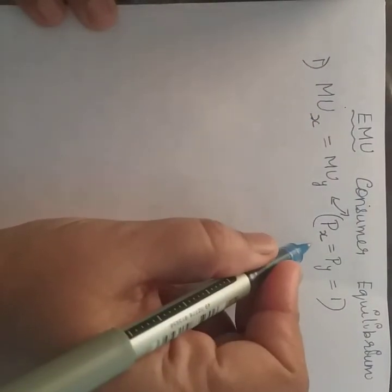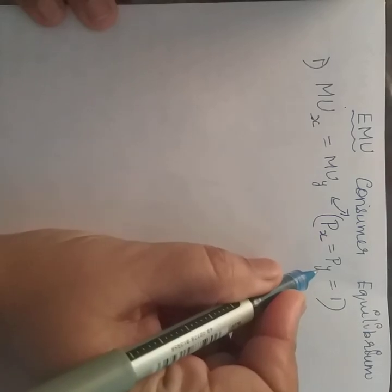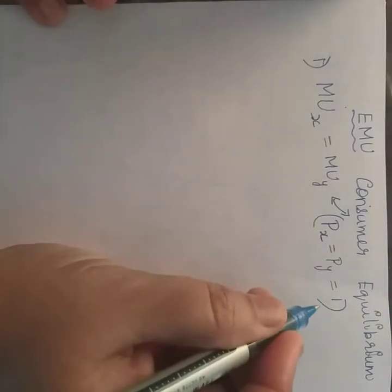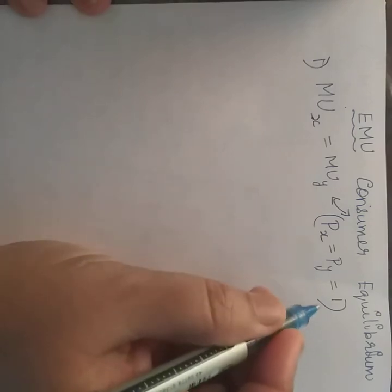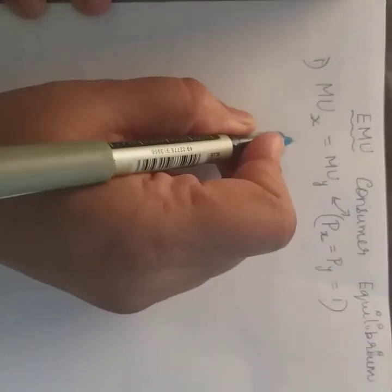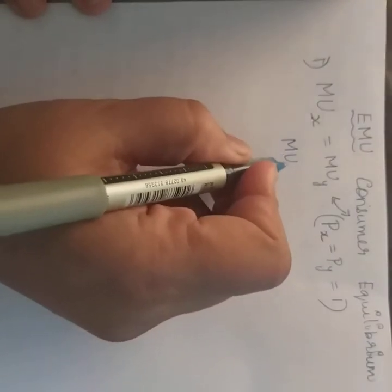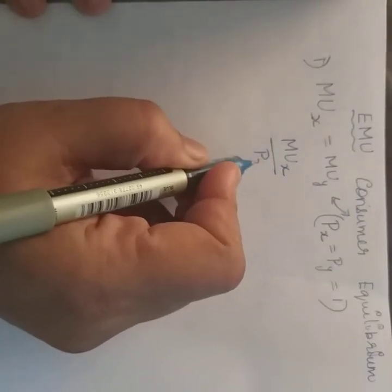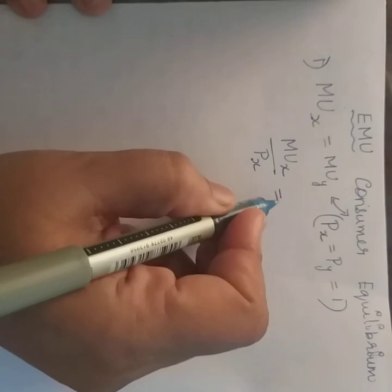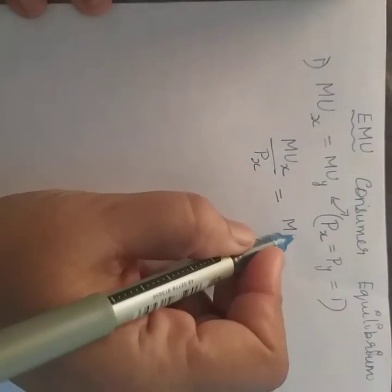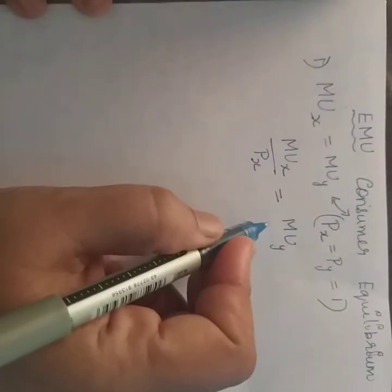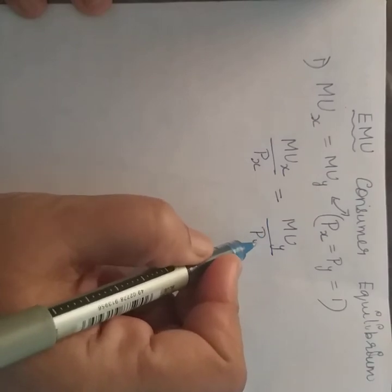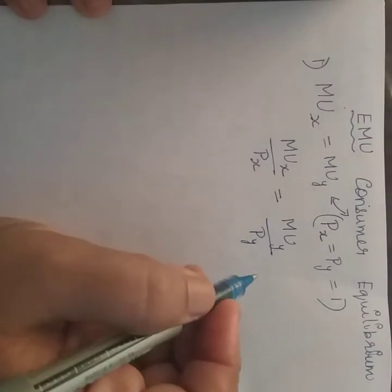Now, what if the price of X and price of Y are not equal? In such a case, the ratio of marginal utility of product X to the price of product X should be equal to the ratio of marginal utility of product Y to the price of product Y.